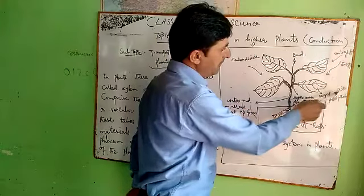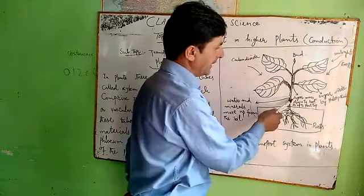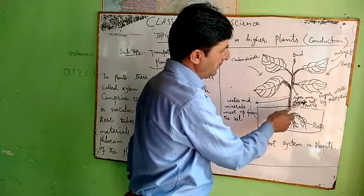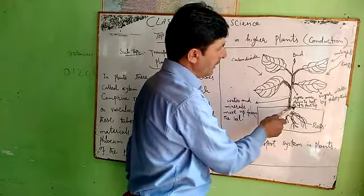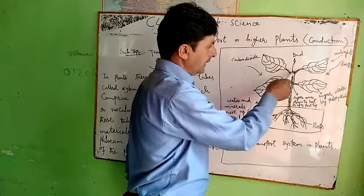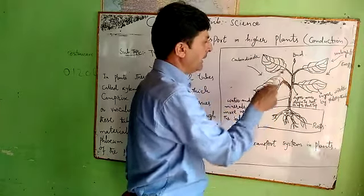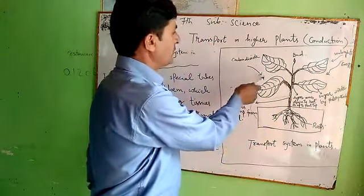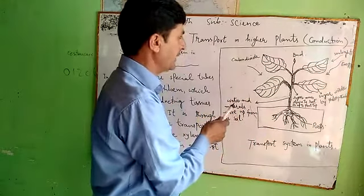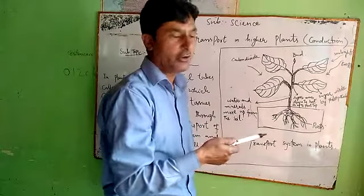Sugar is made by leaves through photosynthesis. This sugar moves down to the root or up to the plant top — downwards or upwards. This is the carbon dioxide. Plants take in carbon dioxide and release oxygen.